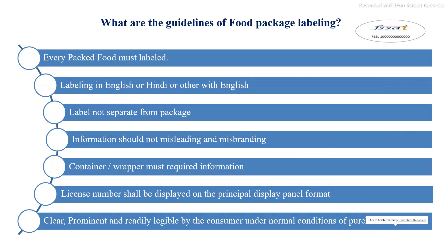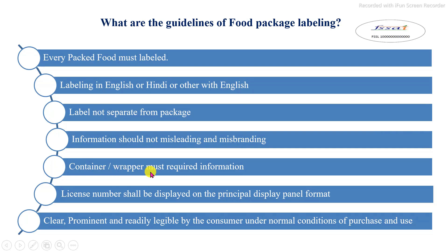Guidelines for Food Packaging Labeling: After packaging, each and every food product must be labeled. Labeling information must be in English or Hindi or any other regional language along with English. Labeling should not be separate from the package, and should not involve misreading and misbranding. Container and wrapper also must have specific labeling information. The license number shall be displayed on the principal display panel. Labeling must be clear, prominent, and readily legible by the consumer under normal conditions of purchase and use.